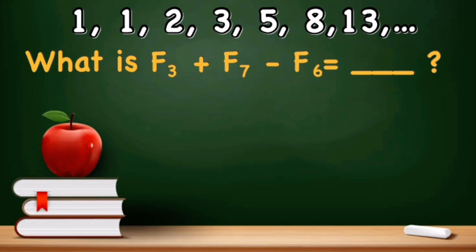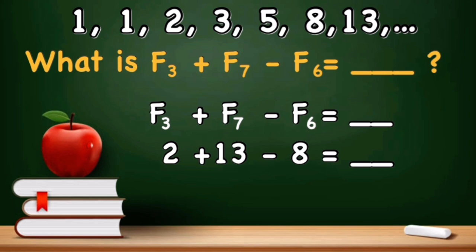Now let us have another example. What is F of 3 plus F of 7 minus F of 6? First, let us substitute the given terms: F of 3 is 2, F of 7 is 13, and F of 6 is 8. So 2 plus 13 minus 8 is 7. Therefore, the answer is 7.